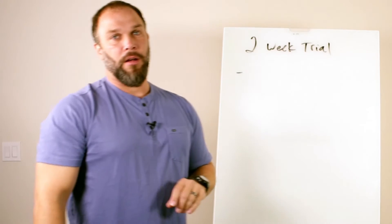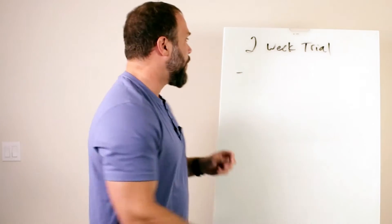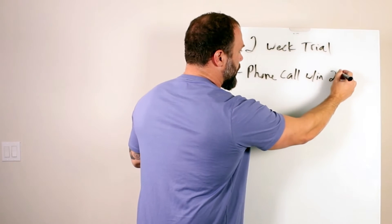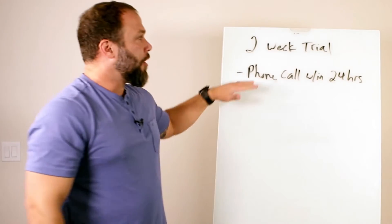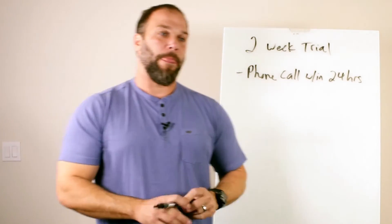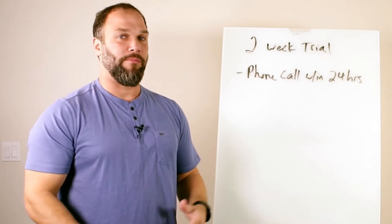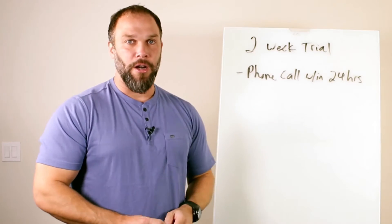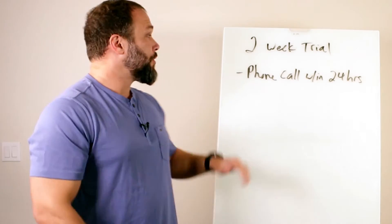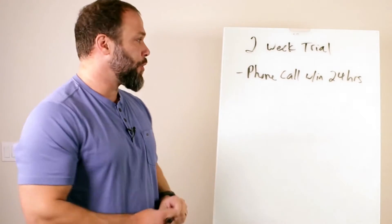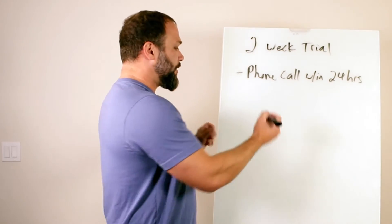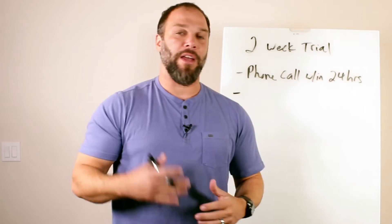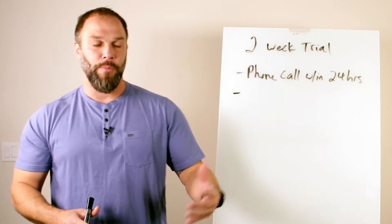So number one, as soon as they come in for their first workout, they should be getting a phone call within 24 hours. The longer they go in this trial without having any contact from you, the quicker they start feeling like they're just a number, like this is just a Me Too program, like all the other programs they tried. And somebody's just trying to kill them in the workout. They don't really care. And once they're gone, they're gone. They don't think about them until they show up again. So phone call within 24 hours is mandatory.